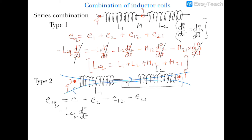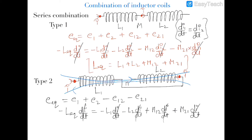So -L_eq × dI/dt = -L1 × dI/dt - L2 × dI/dt + M12 × dI/dt + M21 × dI/dt. Cancelling dI/dt throughout, we get L_equivalent equals L1 plus L2 minus M12 minus M21.